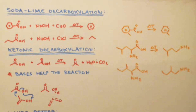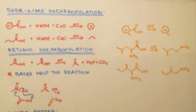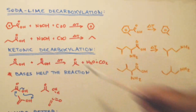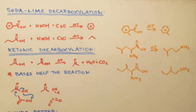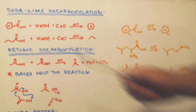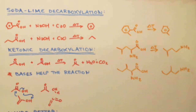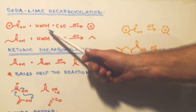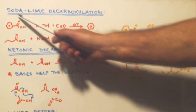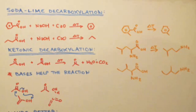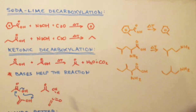This is John Black, super chemist. I already did a video called soda lime decarboxylation, so I'm just going to go over this quickly because it is similar to what I'm going to discuss, which is ketonic decarboxylation. They're very similar. Soda lime decarboxylation is just where you take a carboxyl group and use sodium hydroxide and calcium oxide — soda lime — and you heat it up with a torch in a metal vessel, hopefully stainless steel.